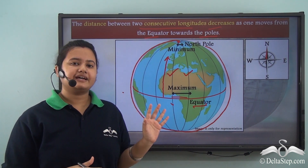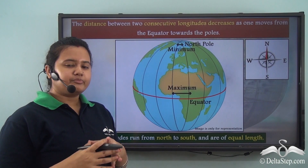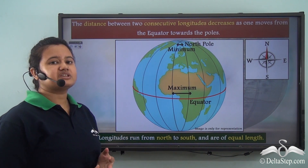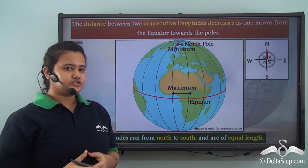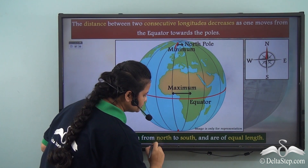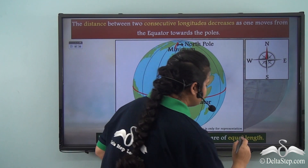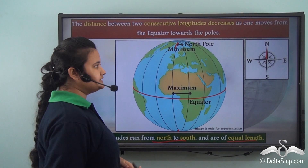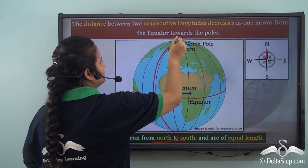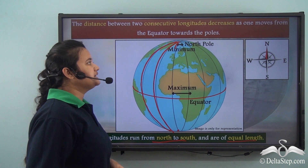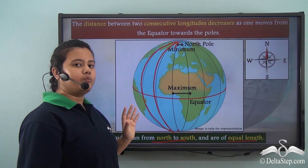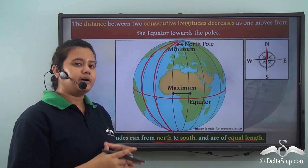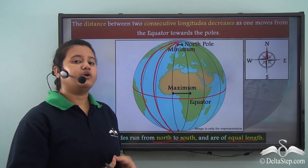Now, what about the size of these lines? Longitudes are vertical lines running from north to south pole, and these longitudes are of equal length. That is, the size of all the longitudes are the same — they run from the north pole to the south pole. So the size of latitudes differs, where the equator is the greatest, while the other latitudes are smaller. But all the lines of longitudes are of equal length.